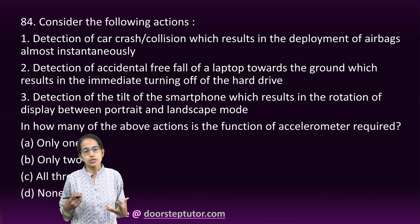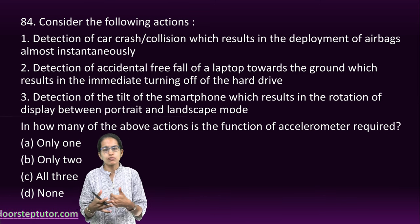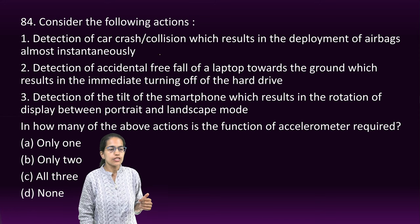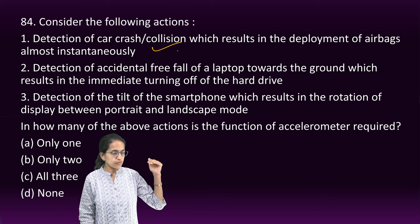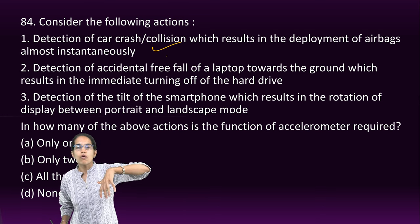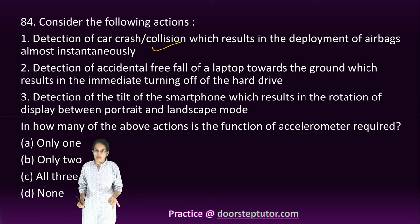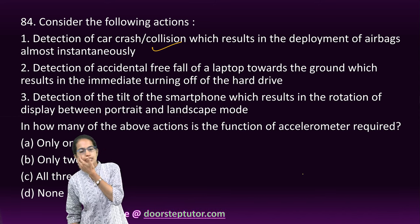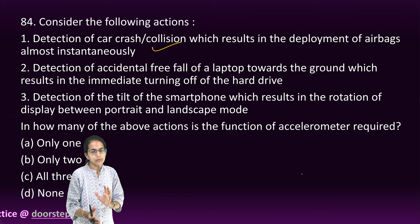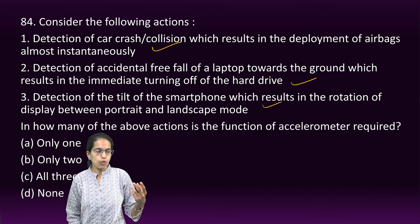An accelerometer is a device that measures vibration and speed changes. In a collision, the car's airbags open instantaneously due to the accelerometer detecting sudden deceleration. If a laptop falls from a height, the hard disk turns off due to the accelerometer. Similarly, switching between landscape and portrait views on a smartphone is also due to the accelerometer. So all three are correct options.